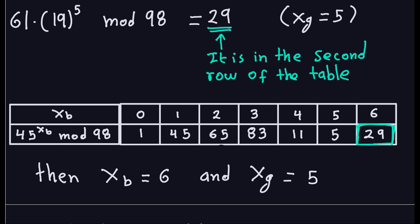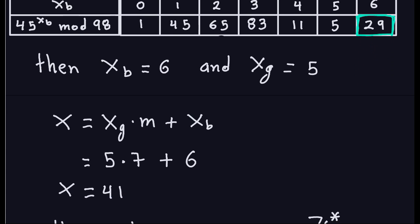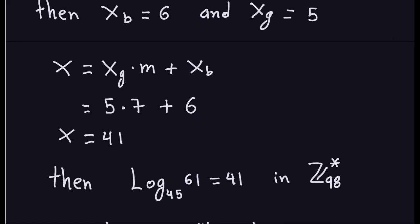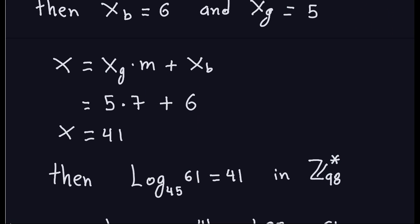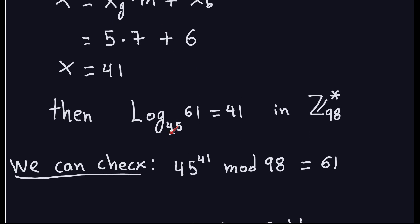Once we have xg and xb, the discrete log x is given by x = xg * m + xb = 5 * 7 + 6 = 41. So the discrete log in base 45 of 61 in Z98* is 41. We can verify this by checking that 45^41 mod 98 = 61, which is indeed true.